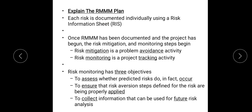Next is the RMM Plan. Each risk has to be documented in the plan using a Risk Information Sheet (RIS). Once the RMM has been documented and the project has begun, the risk mitigation and monitoring steps begin. Mitigation is a process of problem avoidance and monitoring is a tracking activity. The monitoring objective is to assess whether predicted risks occur, to ensure avoidance steps are being properly applied, and to collect information so that future risk analysis is done properly. That concludes Part 1 of Module 5. We will meet again in Part 2.